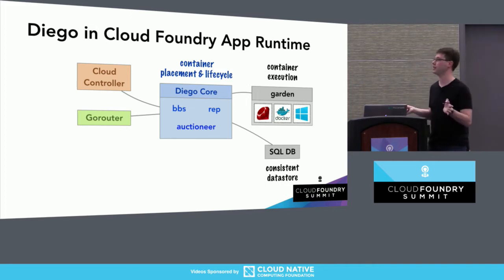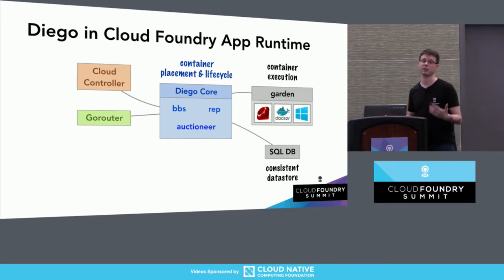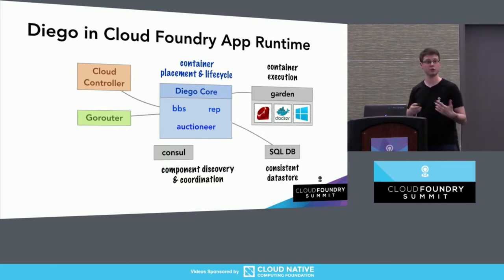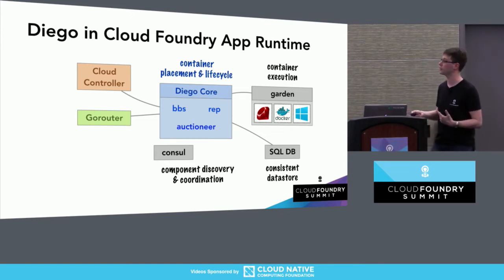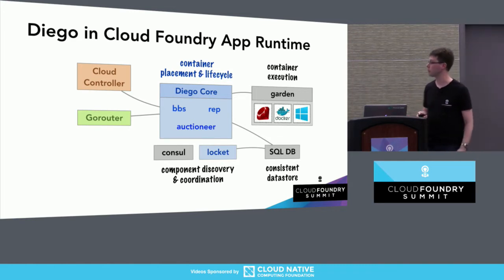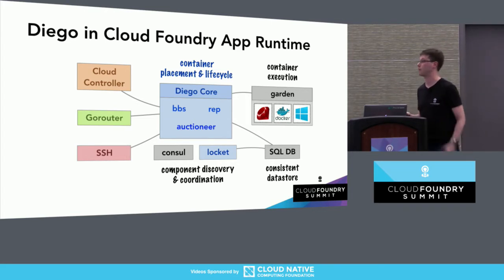In order to do that, the core of Diego has some dependencies. In particular, it relies on a consistent data store — nowadays a SQL database, MySQL or Postgres — to coordinate activity. The components also need coordination amongst themselves. In the past we've used Consul for that, and we've been introducing our own replacement due to issues we've seen with Consul and BOSH together. The Diego release also includes ancillary capabilities, most notably the system that enables SSH access into application containers.